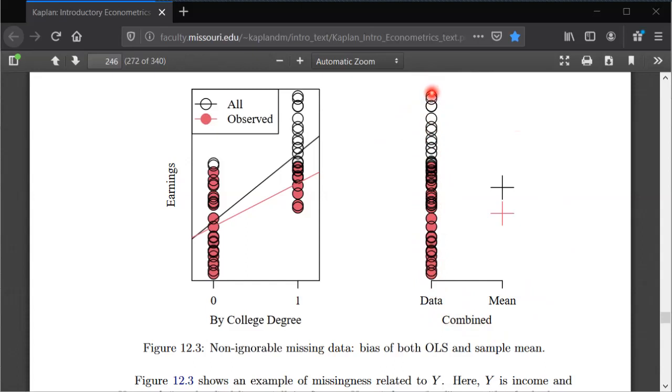And so if we could observe all those values and just take the sample mean, that would give us a good estimate of the population mean. And that's exactly what this black plus sign here is. It's the sample mean if we looked at all the individuals who were sampled.